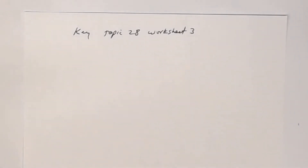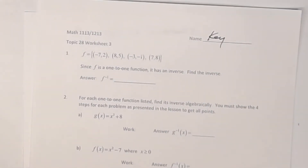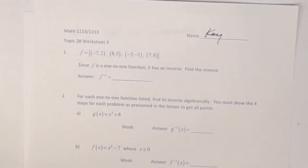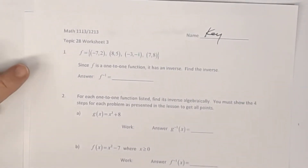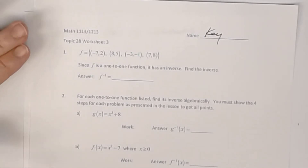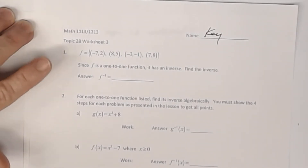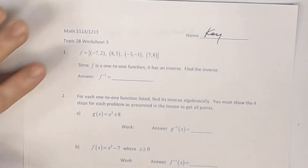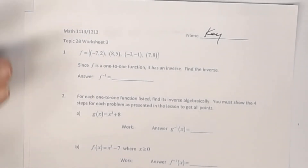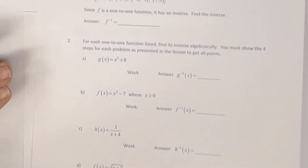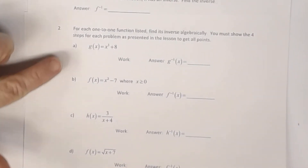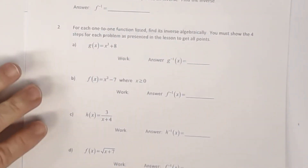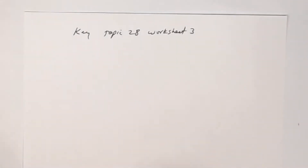This is the key to Topic 28, Worksheet 3. On this worksheet, you have two sets of problems. You have one where you're given a set of ordered pairs and you're asked to find the inverse — and you're told it's one-to-one, so you don't have to check for that. And then number two, you're told that all these are one-to-one functions and you're asked to find the inverse. So let's look at number one.